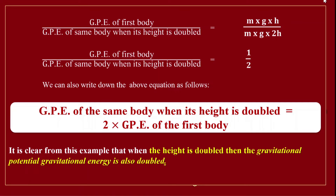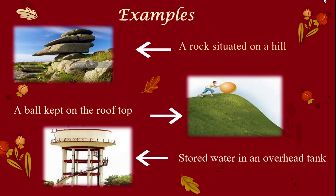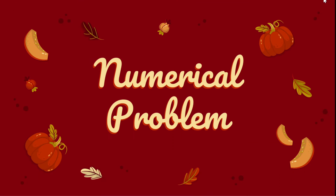What are examples of gravitational potential energy? First, a rock situated on a hill. Second, a ball kept on a rooftop. Third, water stored in an overhead tank.